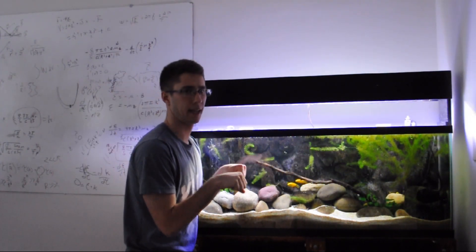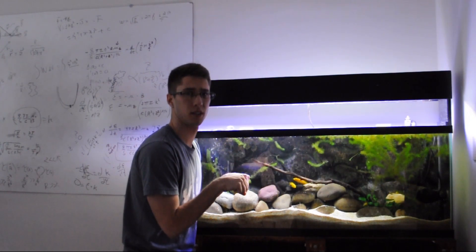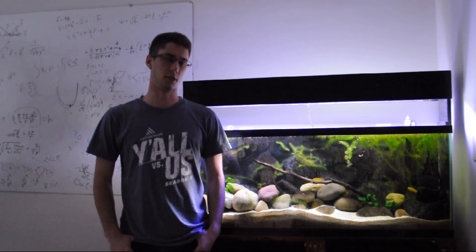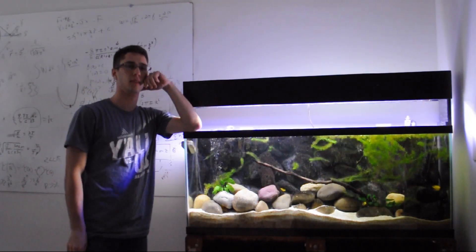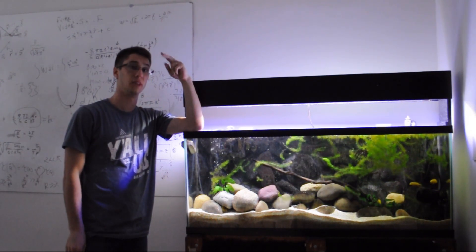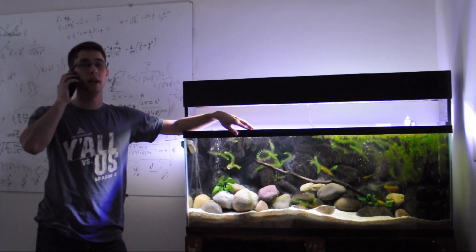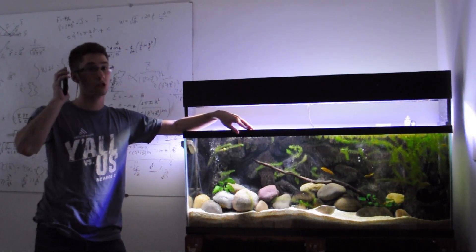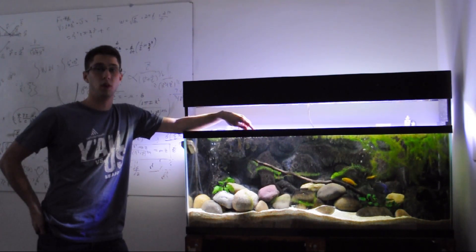Two fish are in a tank. One turns to the other and says, 'Can you drive this thing?' So what do sea monsters eat? Fish and ships. So I didn't know, I do much fishing, he only had two worms.